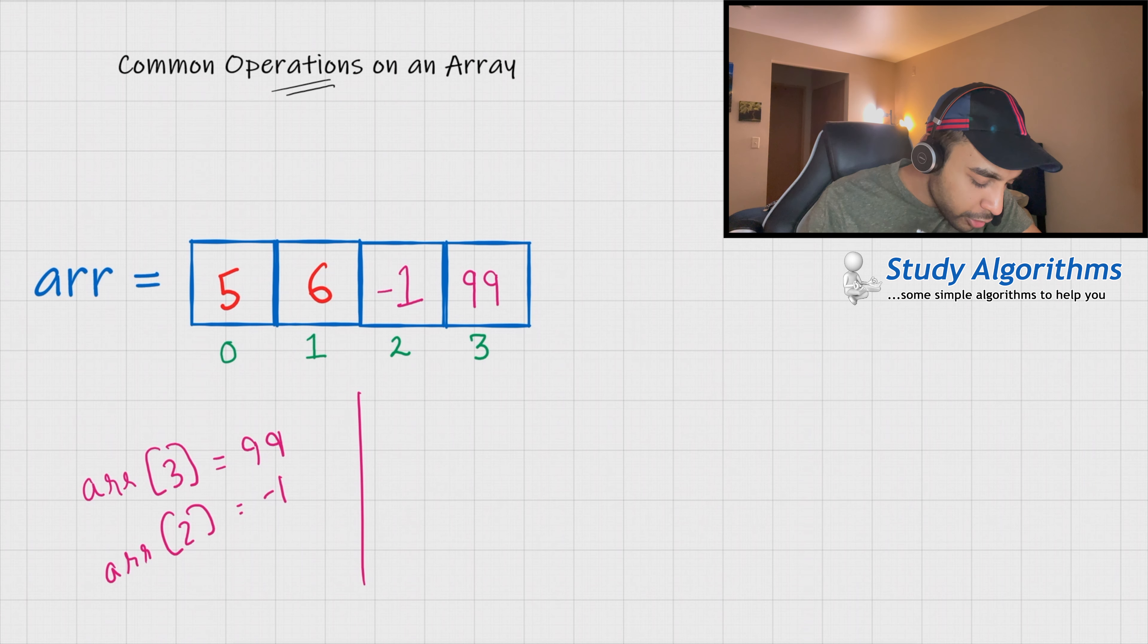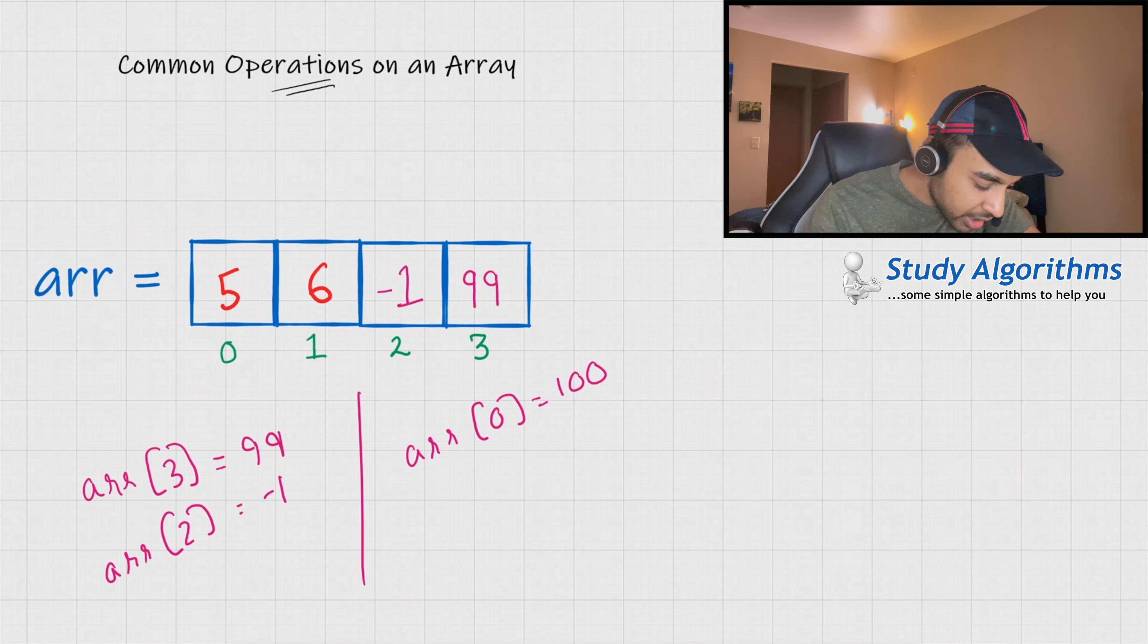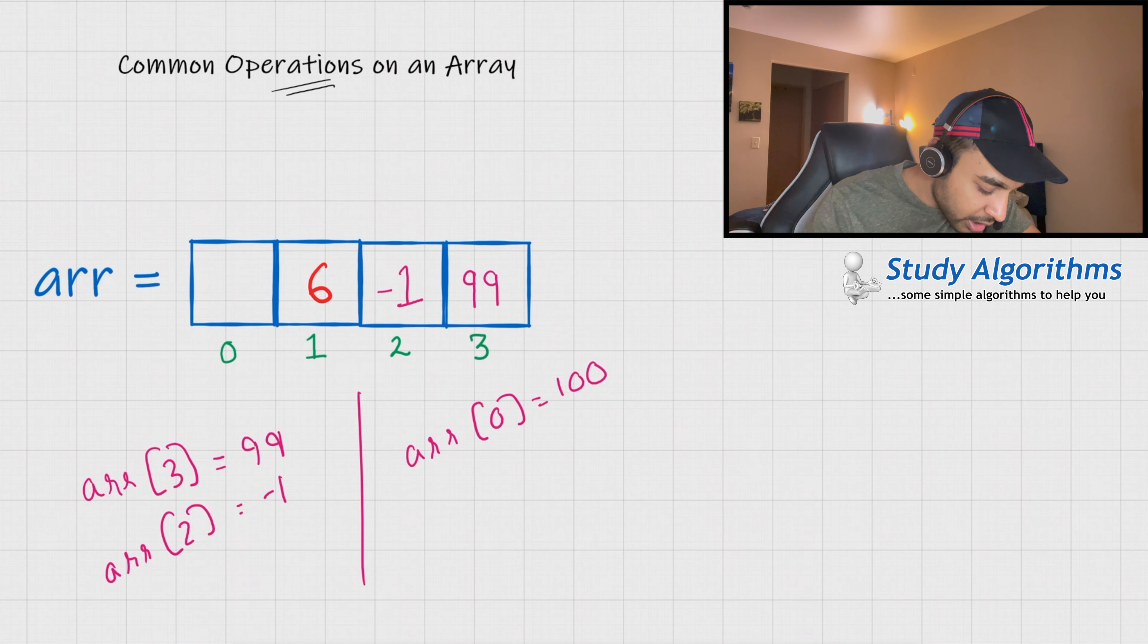So, if you do something like arr at 0 equals to 100. Now, this will update the value at 0 index. So, the value at index 0 would change to 100. And this is simply how you can perform operations on arrays.